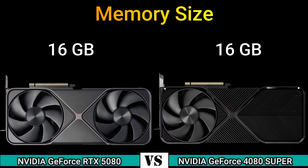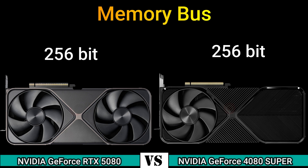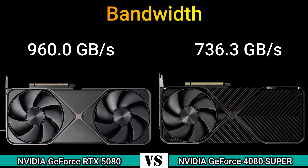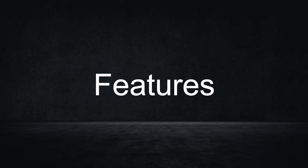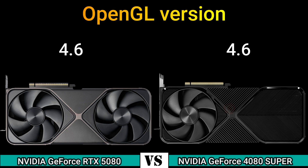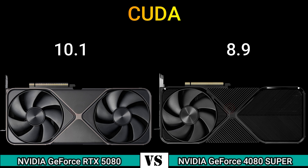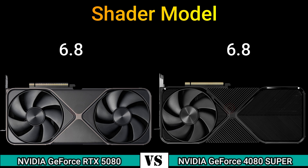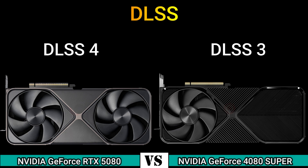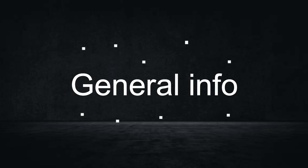Memory size: 16 GB. Memory type: GDDR7 and GDDR6X. Memory bus: 256-bit. Bandwidth: 960.0 GB/s and 736.3 GB/s. DirectX version: 12 Ultimate 12.2. OpenGL version: 4.6. OpenCL version: 3.0. Vulkan: 1.4 and 1.3. CUDA: 10.1 and 8.9. Shader model: 6.8. DLSS 4 and DLSS 3. DisplayPort: 2.1a and 1.4a.